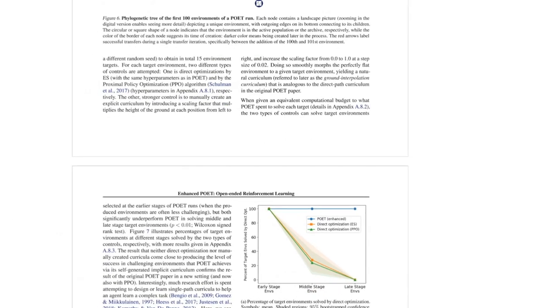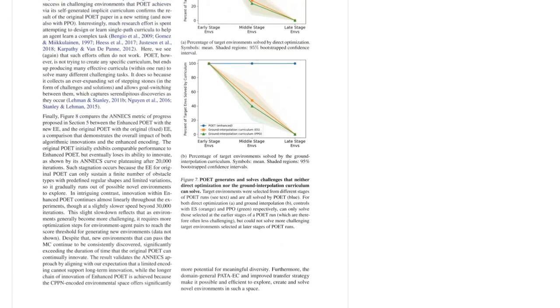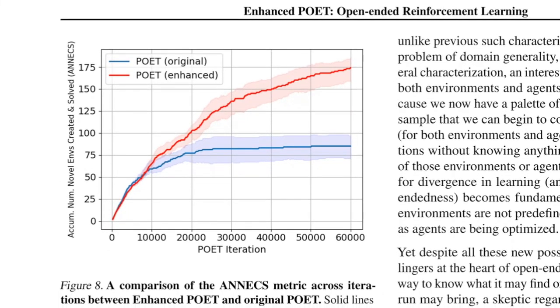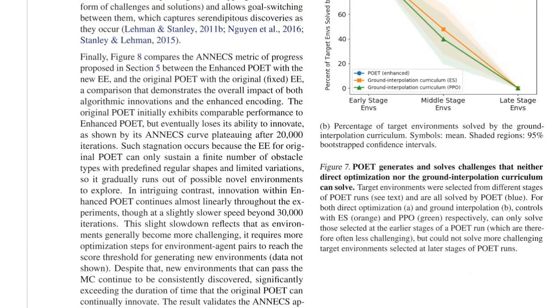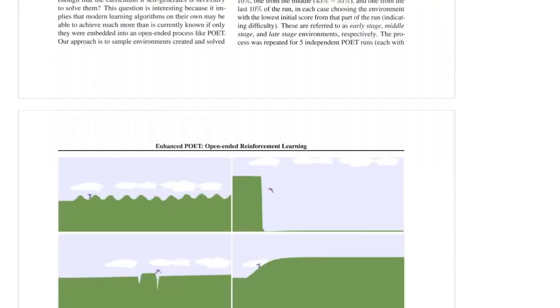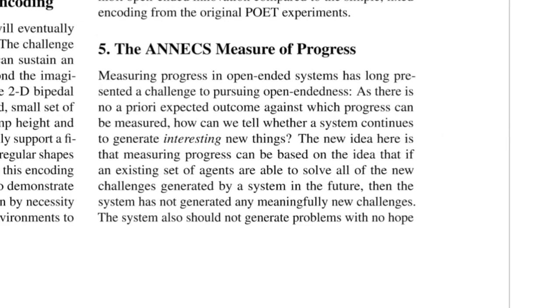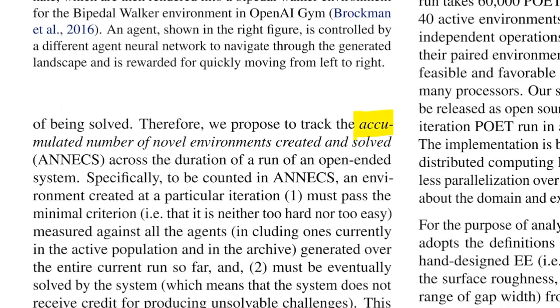So they also propose kind of a novel metric to measure progress. So the question is, how do we measure progress in these algorithms, in these open-ended algorithms? And what they propose is this Annex score, which is, I have to go and look it up. The Annex score, I think, is the number of new environments that are solved. Yes, so exactly. The question is whether a system continues to generate interesting new things.